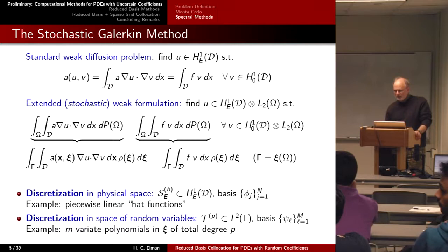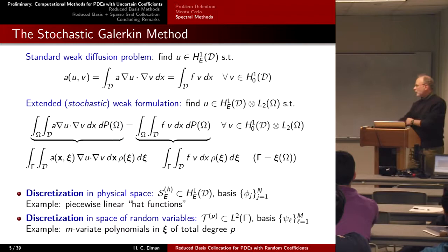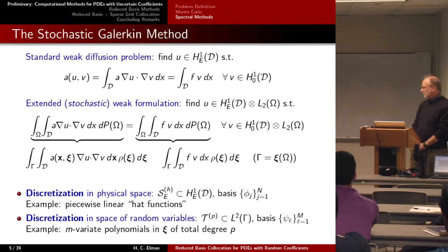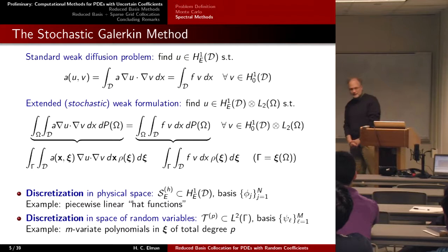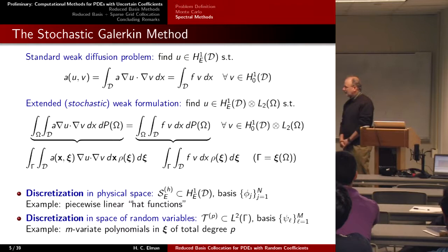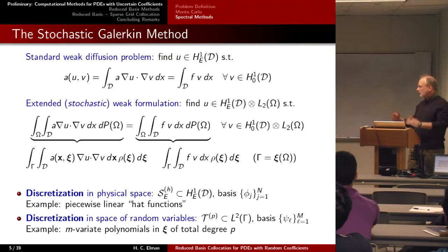We express a new weak formulation where we look at test functions in the tensor product of the spatial functional space with the stochastic probability space. This treats the M-dimensional random vector as though they play the role of Cartesian coordinates analogous to the d-dimensional spatial coordinates, where d is 2 or 3. M could be something small like 3 to 5, or it could be a million. The methods I'm discussing today are really only practical when M is on the order of tens at most.